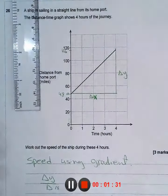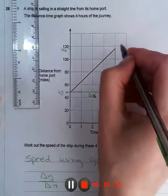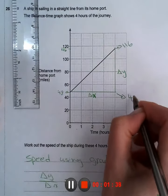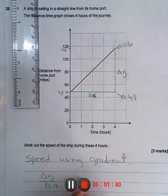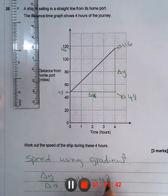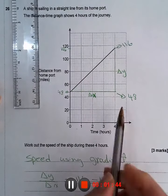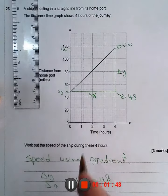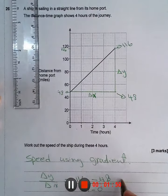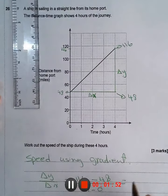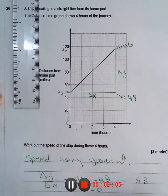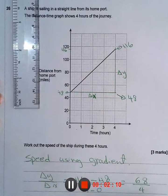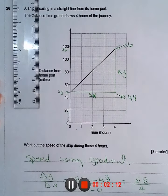Delta y over delta x. The highest y is 116 and the lowest y is 48. So this is 116 minus 48, over delta x which is 4 minus 0. 116 minus 48 equals 68 over 4, which is 17 miles per hour.